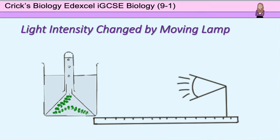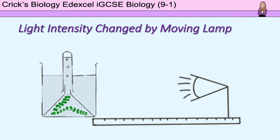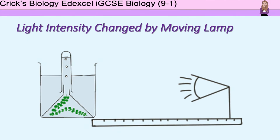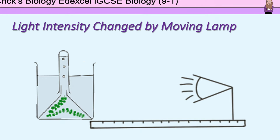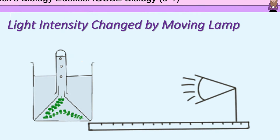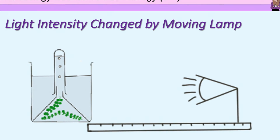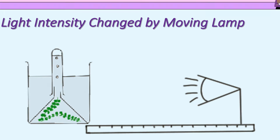We increase light intensity by moving the lamp nearer to the pond weed. Light intensity is the independent variable, and the rate of oxygen production is the dependent variable.